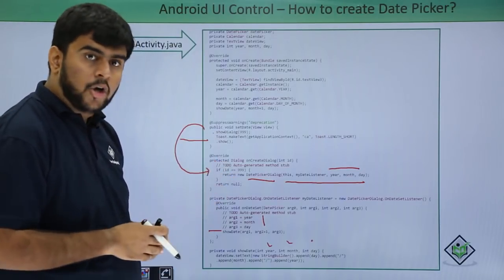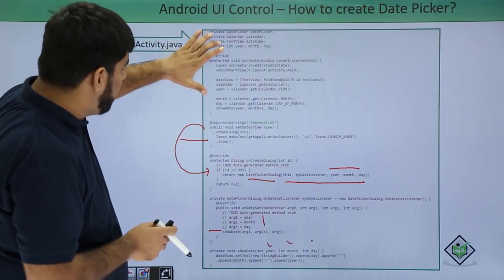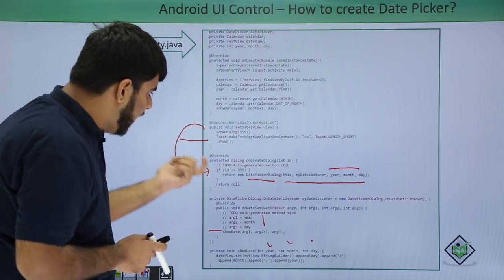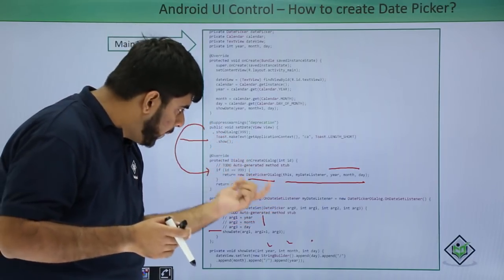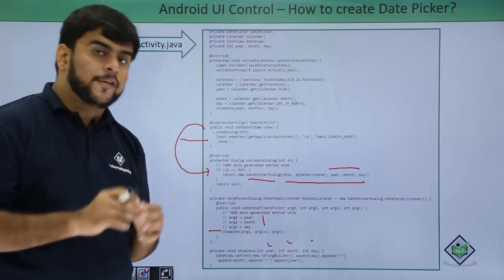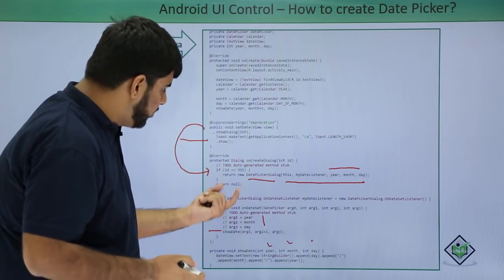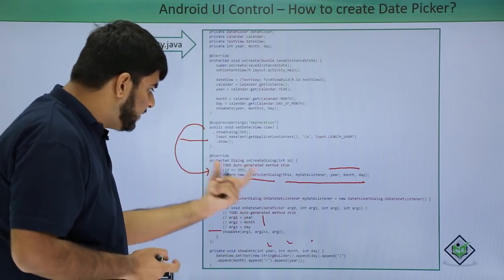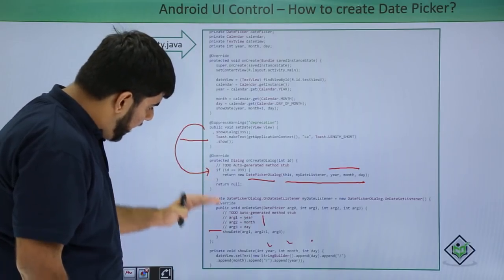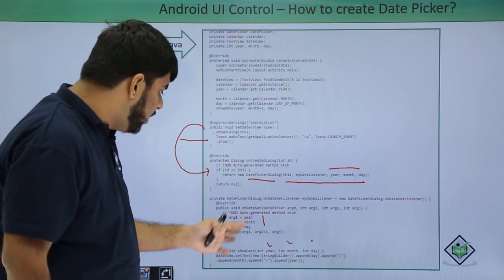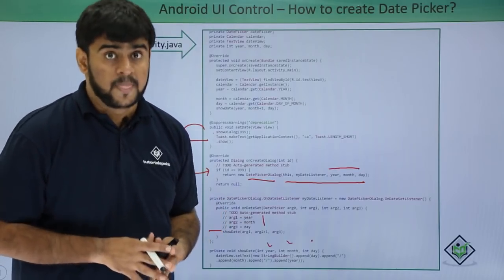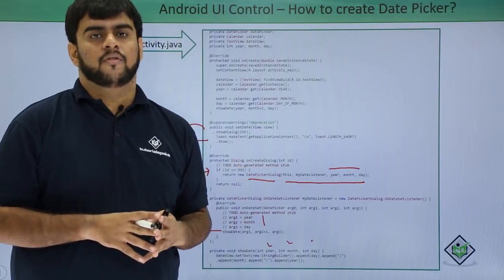Let me summarize the flow before going to Android Studio. On click of a button we enter the setDate method, which fires up a dialog. The dialog calls onCreateDialog which returns a date picker dialog. When the user sets a date and clicks OK, onDateSet is called, which invokes the showDate method that sets the text view and displays the date on screen. Now let's go to Android Studio and see the actual working of the date picker.